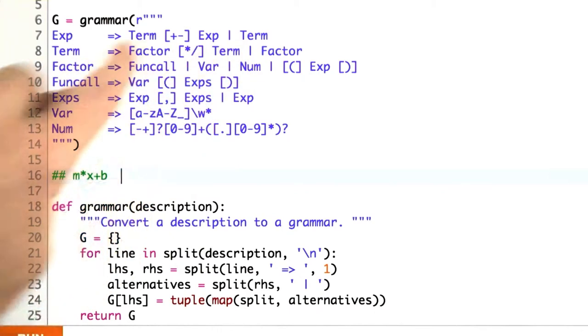Unfortunately, with this description just as it is, I would have a trouble with mx plus b with spaces in between it because nowhere here did I say that spaces can occur between tokens.